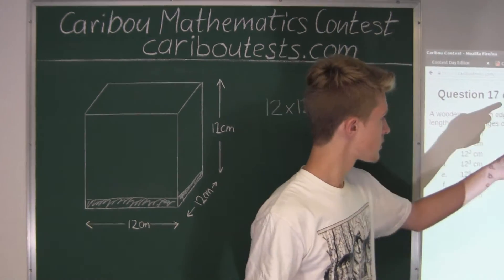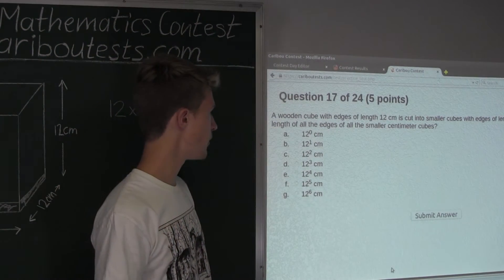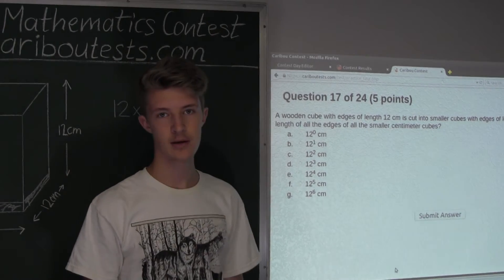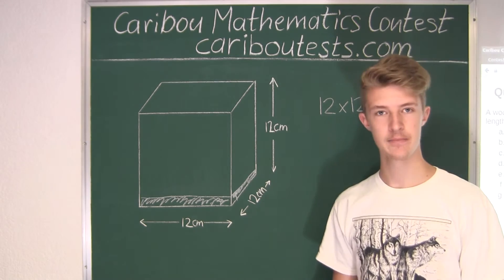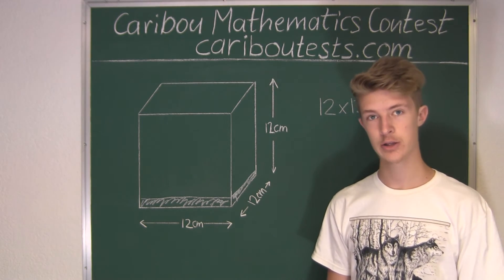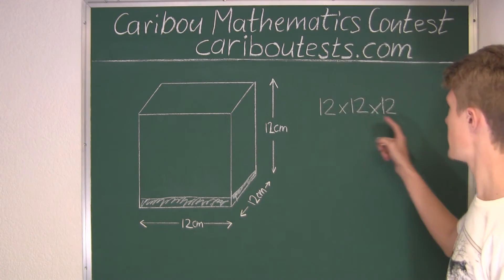Alright, and now the question is, what is the total length of all the edges of all the smaller cubes? Well, to find that out, first we will find the total length of all the edges of one cube, and then we will multiply it by that.